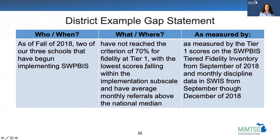with the lowest scores falling within the implementation subscale, and they have average monthly referrals above the national median — as measured by the tier one scores on the TFI from September 2018 and monthly discipline data in SWIS from September through December 2018.